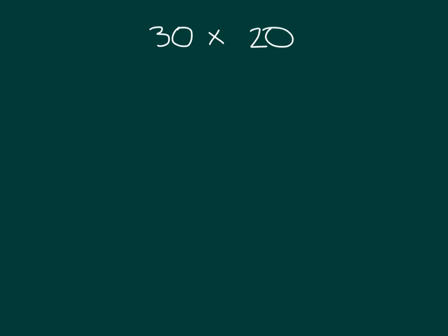Here we have 30 times 20. Let's think about these numbers in unit form. 30 is how many tens? That's three tens times how many tens? Two tens. I do know that three times two gives us six, but let's look at this with an area model to figure out what to do with those units.